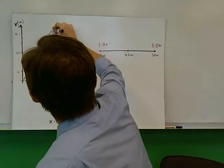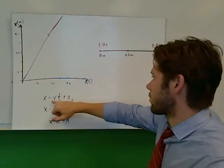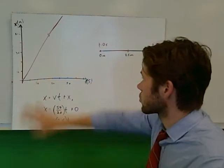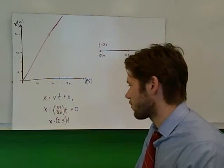Because I know this is a constant speed problem, this is going to be a linear function. I can now use this to solve the problem. I also have the equation of motion: x equals v times t plus x naught. Our initial position is 0. The velocity here is the slope of this line, so that would be 50 divided by 20, which is 2.5.